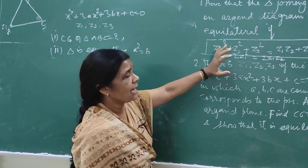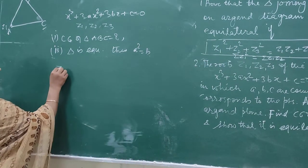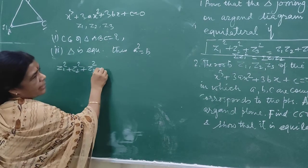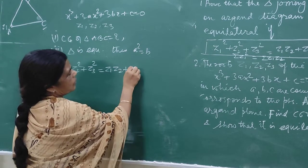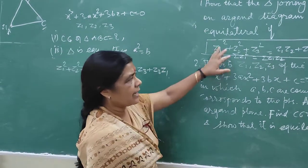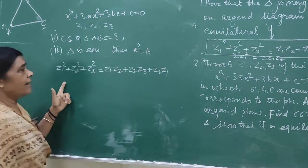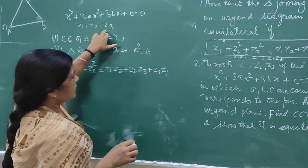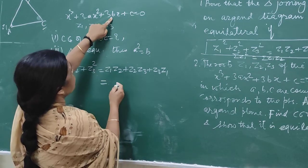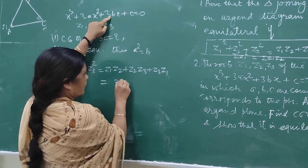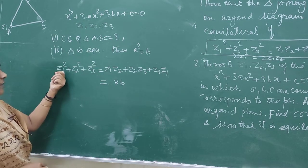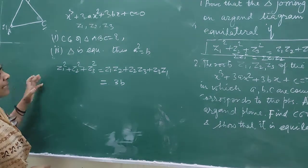For the triangle to be equilateral, we have the condition: Z1² plus Z2² plus Z3² equals Z1·Z2 plus Z2·Z3 plus Z3·Z1. We use this condition now. Since Z1, Z2, Z3 are the roots of this equation, the left side Z1² plus Z2² plus Z3² can be written as (Z1 plus Z2 plus Z3)² minus 2(Z1·Z2 plus Z2·Z3 plus Z3·Z1).